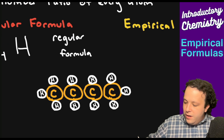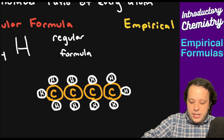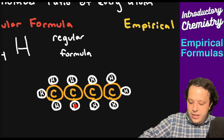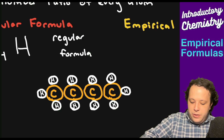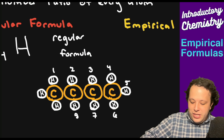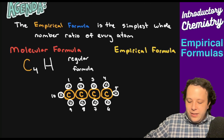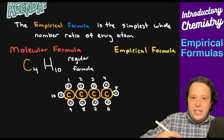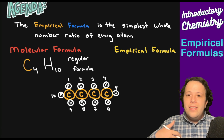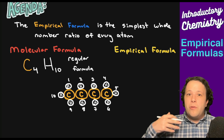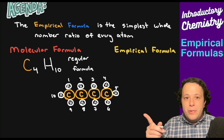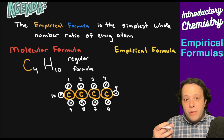Now we're going to count all the hydrogens around this, and we can see we have ten of them, so it's going to be C4H10. The molecular formula represents the actual composition of this molecule — it's the regular formula, what you're going to see in a chemical reaction. Now with the definition of empirical formula, this is the simplest whole number ratio of every atom, meaning what can we divide all those numbers in C4H10 by to get a simpler ratio?